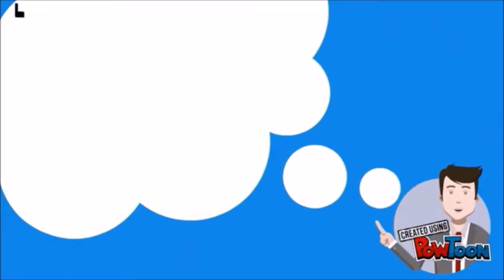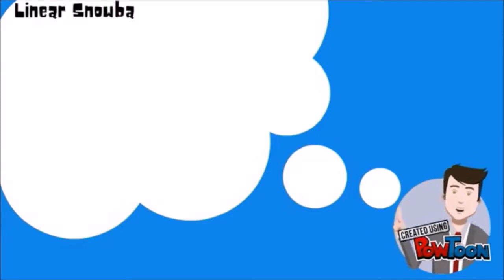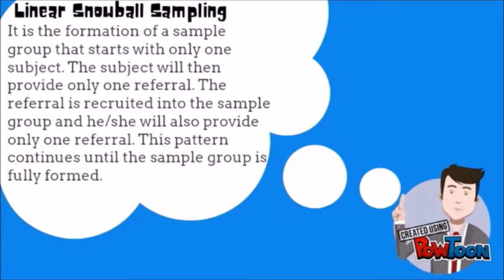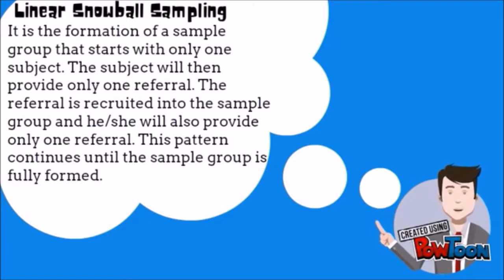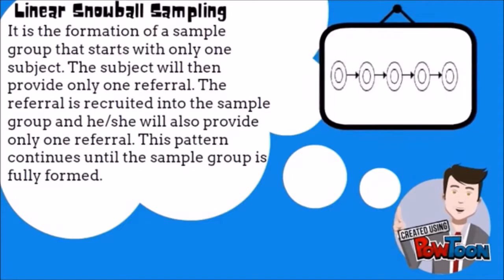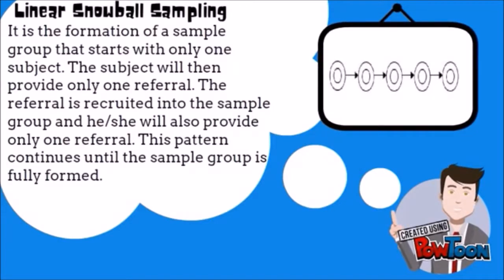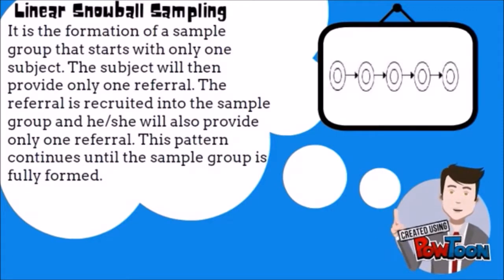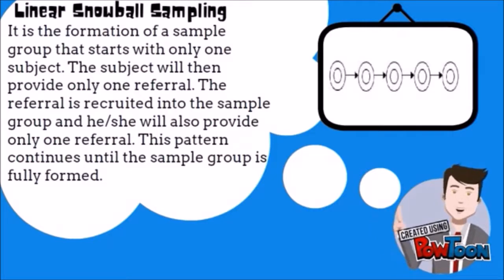The first pattern is Linear Snowball Sampling. It is the formation of a sample group that starts with only one subject. The subject will then provide only one referral. That referral is then recruited into the sample group, and he or she will also provide only one referral. This process continues until the sample group is fully formed.